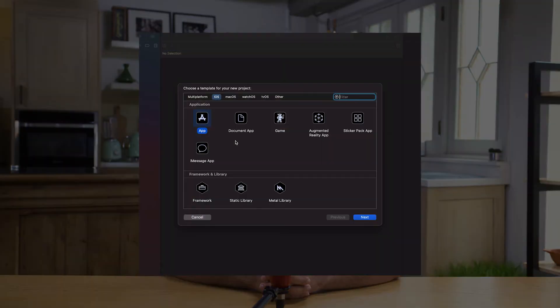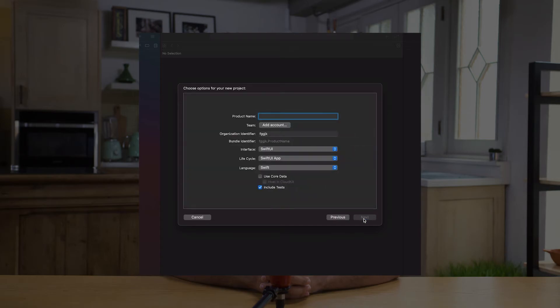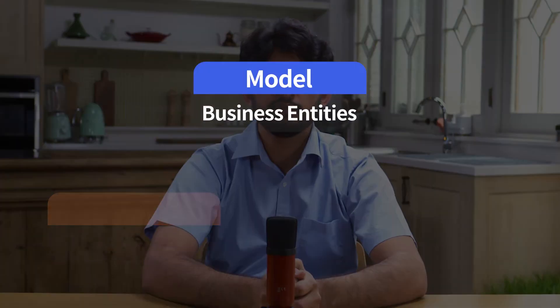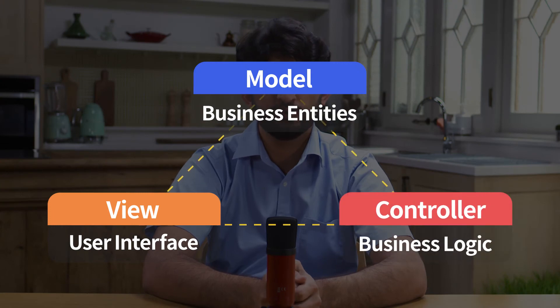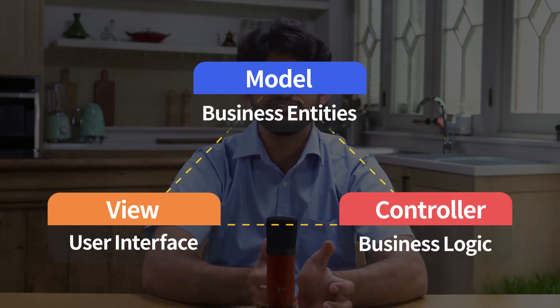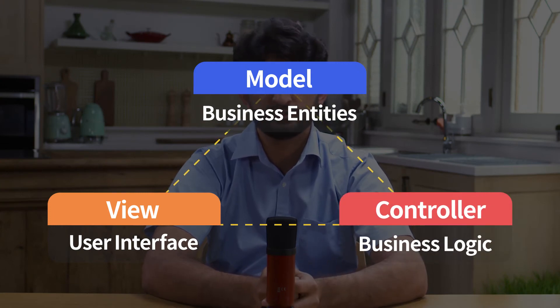Now it's time for you to start iOS development properly by creating a single view application in Xcode. Before heading in, you must understand that each application has three parts: model, view, and controller, which contains your business logic.